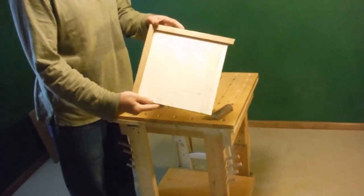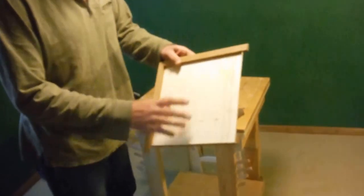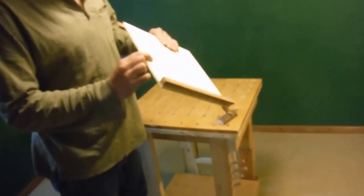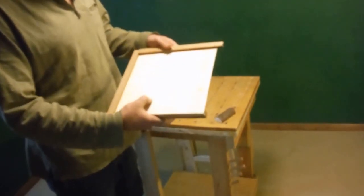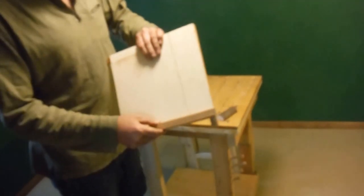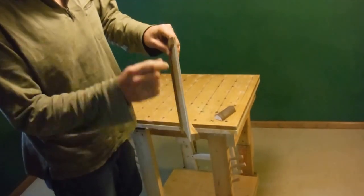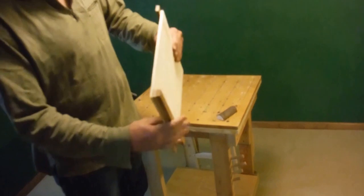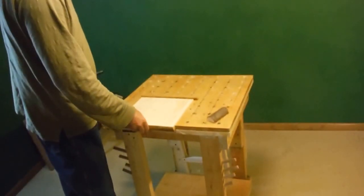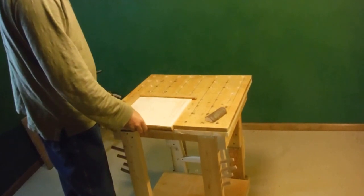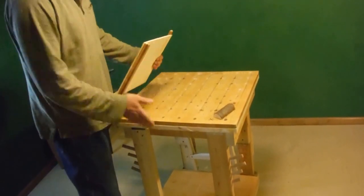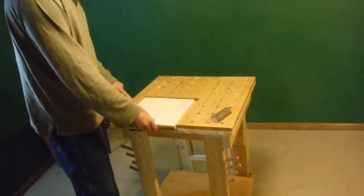The other addition I have is I made this bench hook, which is just a quarter-inch piece of scrap plywood I had around. Put some boards on one edge here and then two boards here and here. This is for smaller pieces.